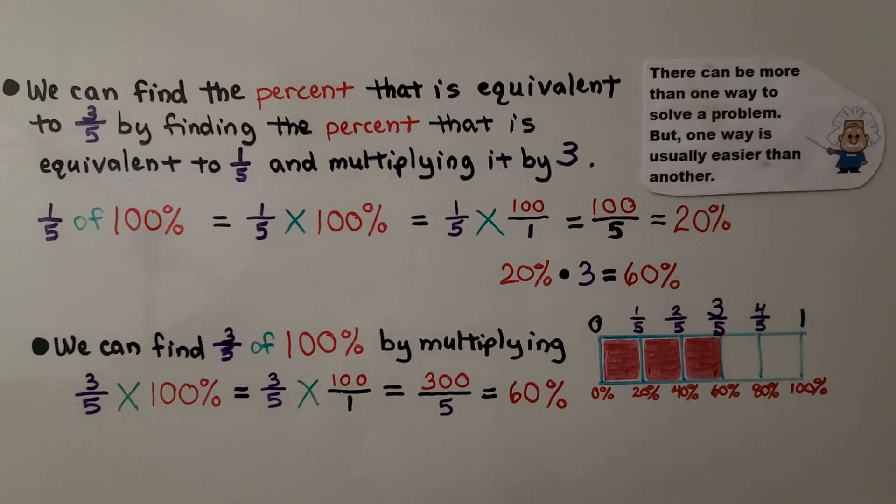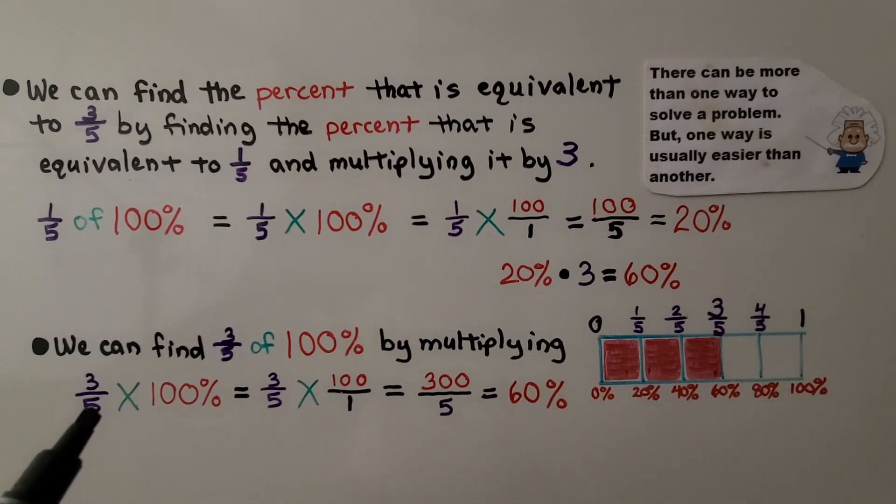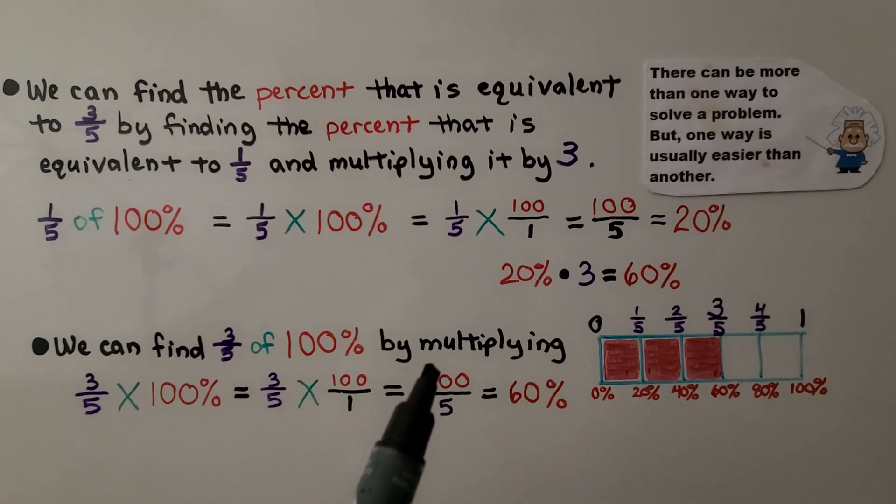And we can find 3 fifths of 100% by multiplying 3 fifths times 100%. So instead of doing the 1 fifth, we just do the 3 fifths. And we get 3 fifths times 100 over 1, because we want to multiply straight across. That's going to give us 300 over 5 times 1 is 5. And we do 300 divided by 5, which gives us 60. It's 60%.